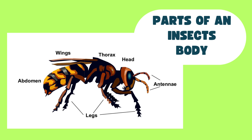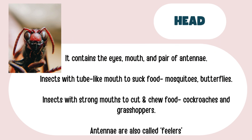Let's look at it further. The head contains eyes, mouth, and a pair of antenna. Most insects can have a tube-like mouth to suck food, such as mosquitoes and butterflies, or they can have strong mouths to cut and chew food, like cockroaches and grasshoppers. Their antenna are also called feelers because they help the insects feel the world around them.